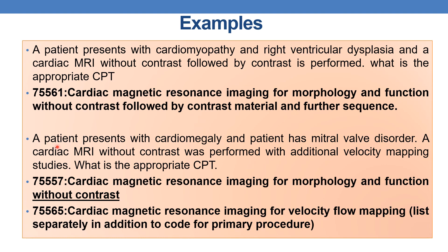Next example: a patient presents with cardiomyopathy and mitral valve disorder. A cardiac MRI without contrast was performed with additional velocity mapping studies. What are the appropriate CPT codes? The first CPT is 75557 — cardiac magnetic resonance imaging for morphology and function without contrast. Additionally, velocity mapping studies are performed to assess the mitral valve disorder, so you add add-on code +75565 — cardiac magnetic resonance imaging for velocity flow mapping. These are the appropriate CPTs for this scenario.